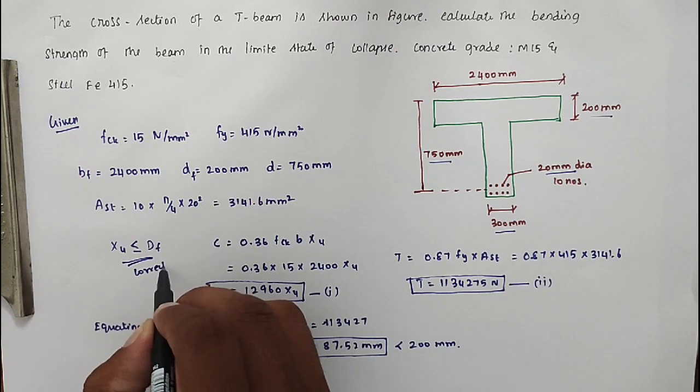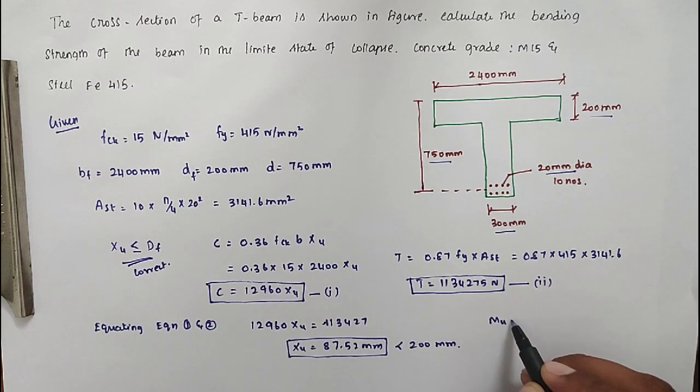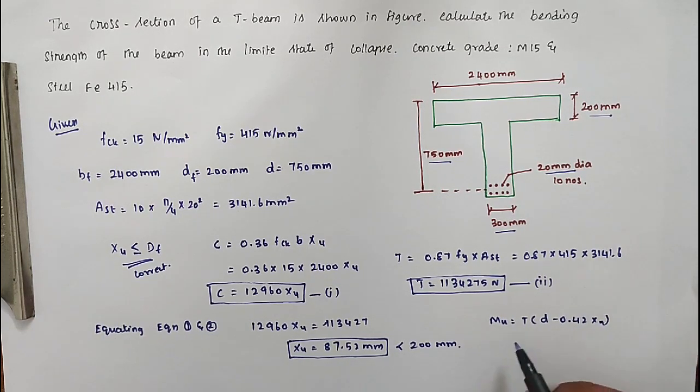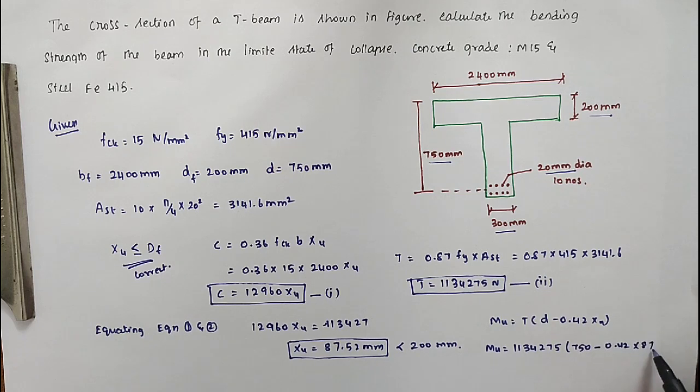Now we can find out the bending moment. MU equal to T into D minus 0.42 XU. Substituting all the values: MU equal to 1134275 into 750 minus 0.42 into 87.52.